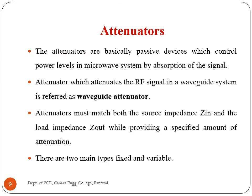Attenuators are passive devices which control power levels in microwave systems by absorption of the signal. An attenuator that attenuates the RF signal in a waveguide system is referred to as a waveguide attenuator. Attenuation measurements over the frequency range of 30 megahertz to 18 gigahertz are based on substitution systems using a 30 megahertz attenuator and signal calibrator. Transfer standard coaxial or waveguide fixed and variable attenuators are calibrated using established 30 megahertz substitution techniques.